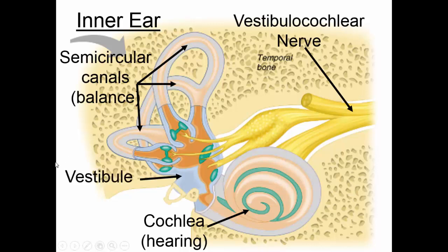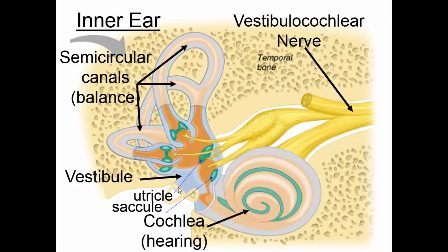The vestibule is the doorway here. The vibrations that came through the ear ossicles would end up on the stapes, and the stapes would push here, setting up vibrations in this fluid. This would cause fluid in the cochlea to be disturbed. Also in the vestibule are two organs that are involved in equilibrium, the utricle and the saccule.